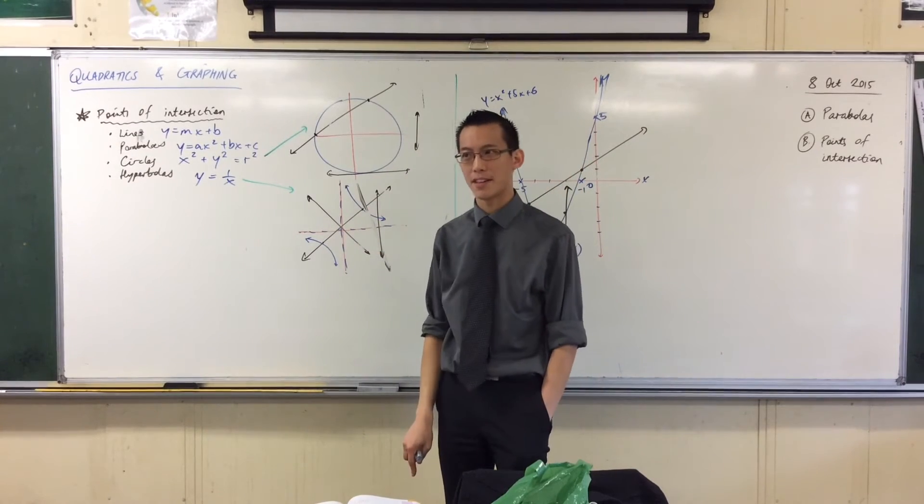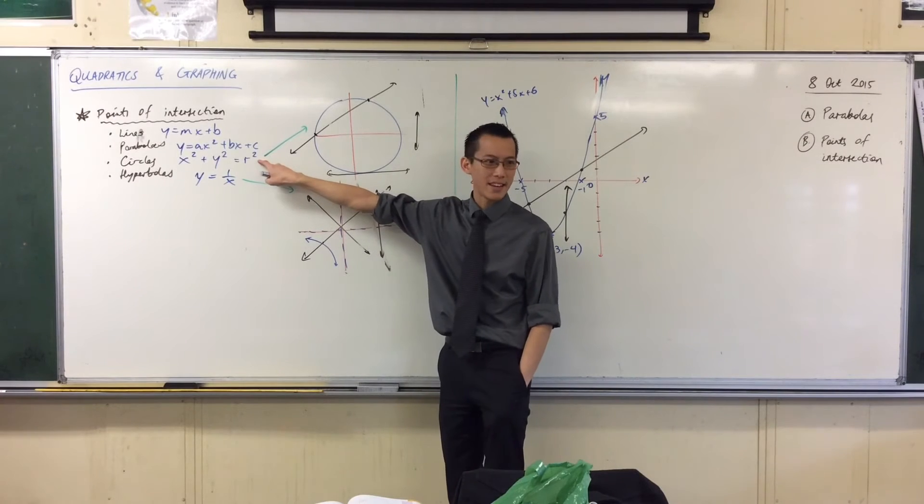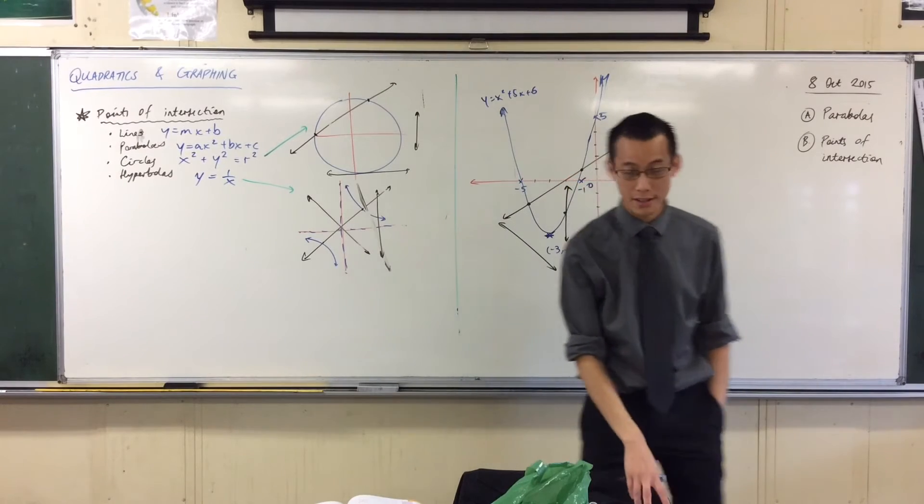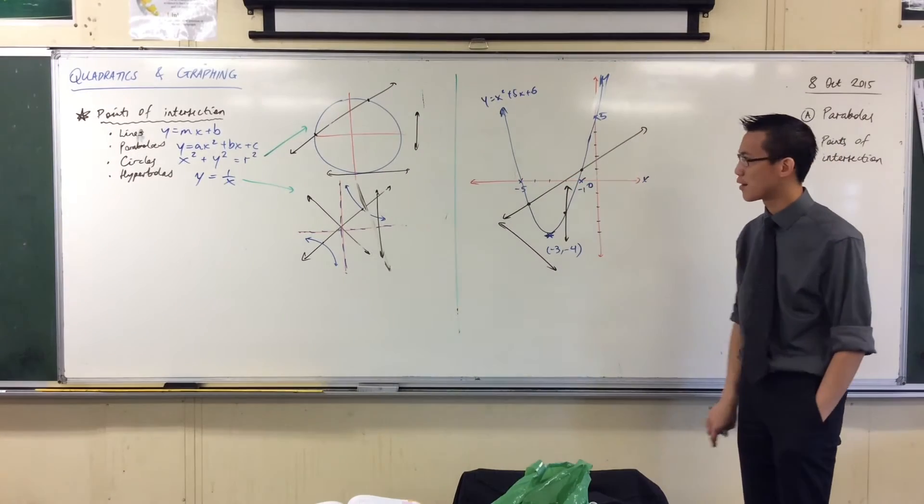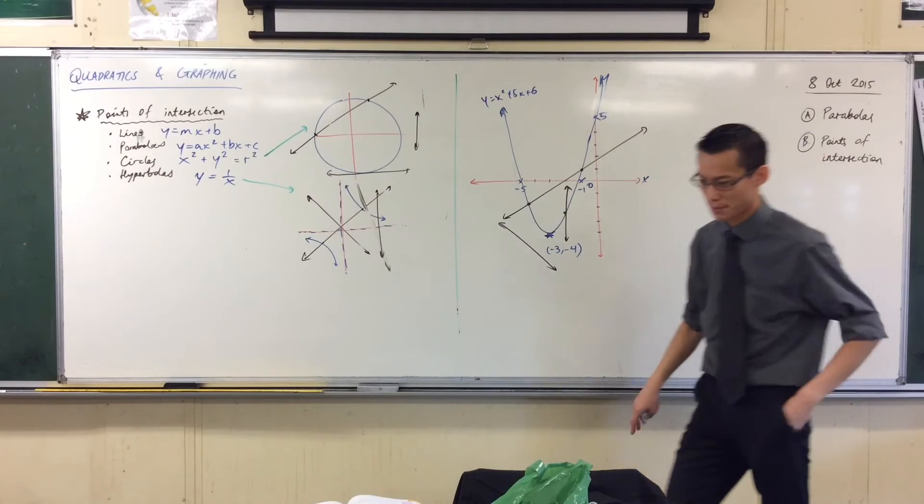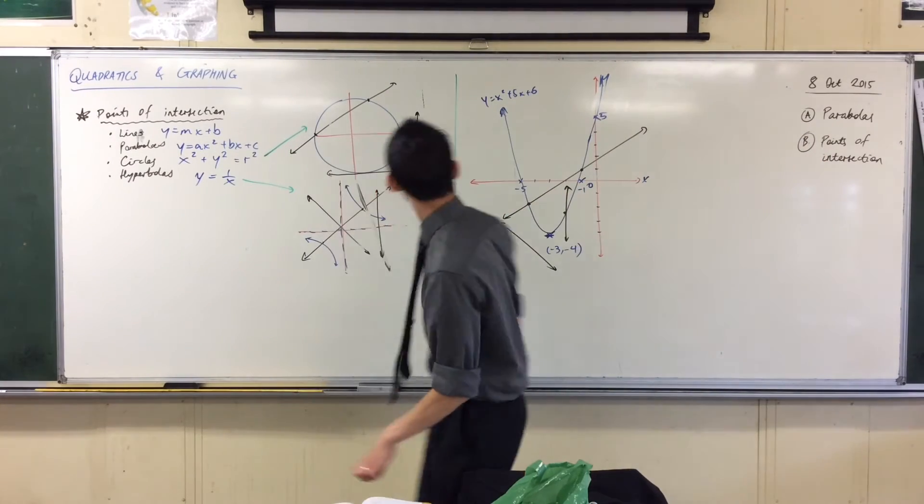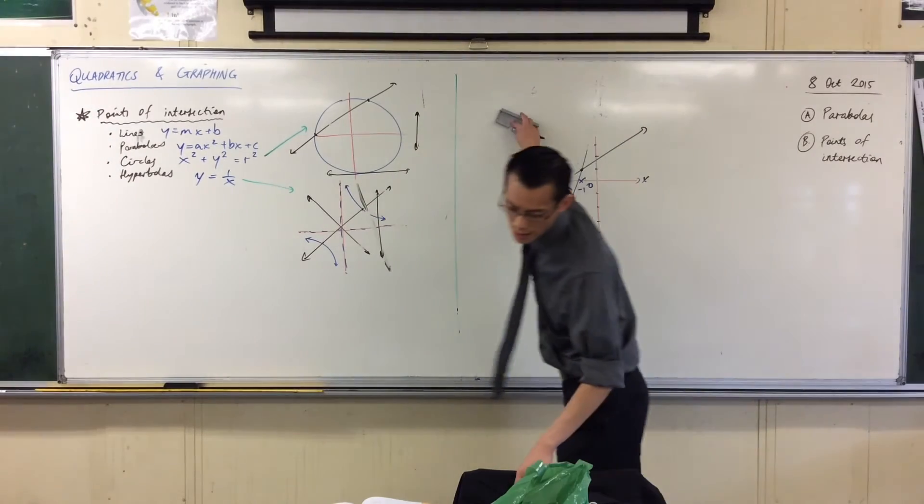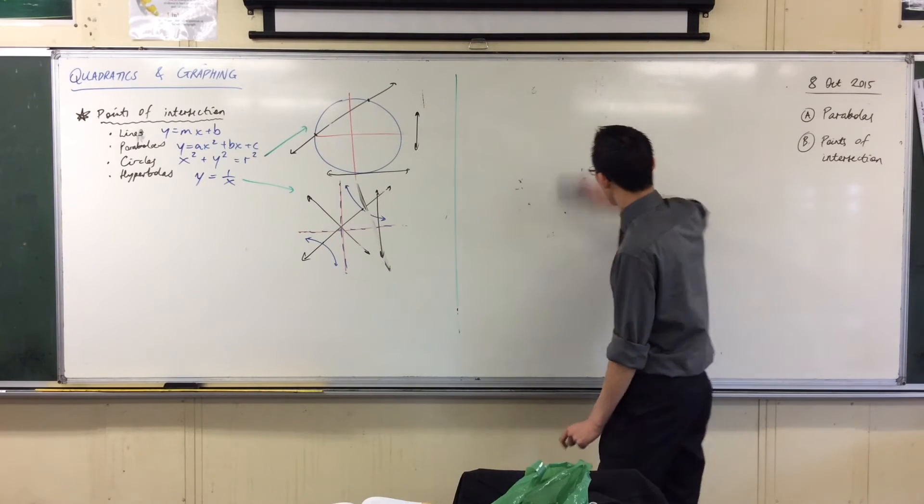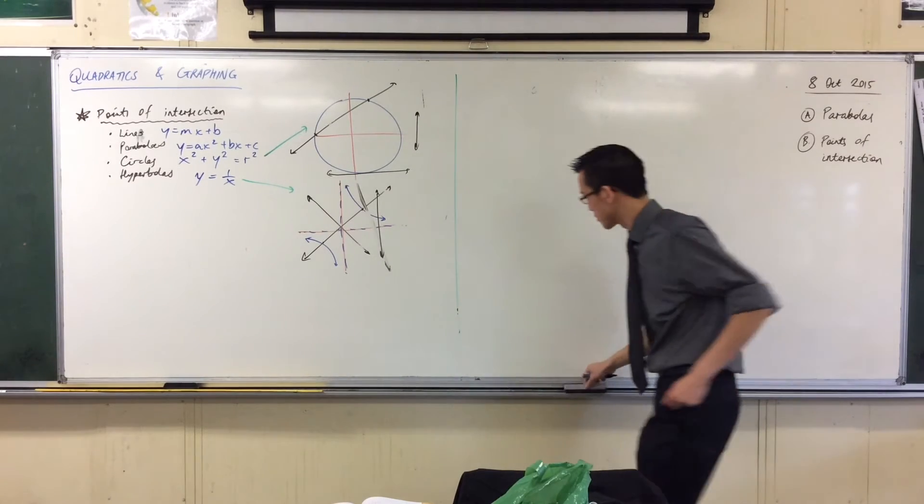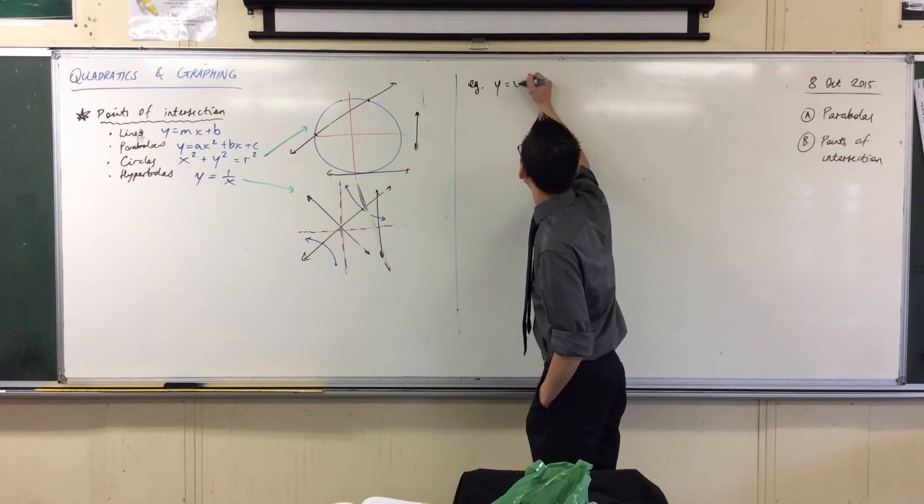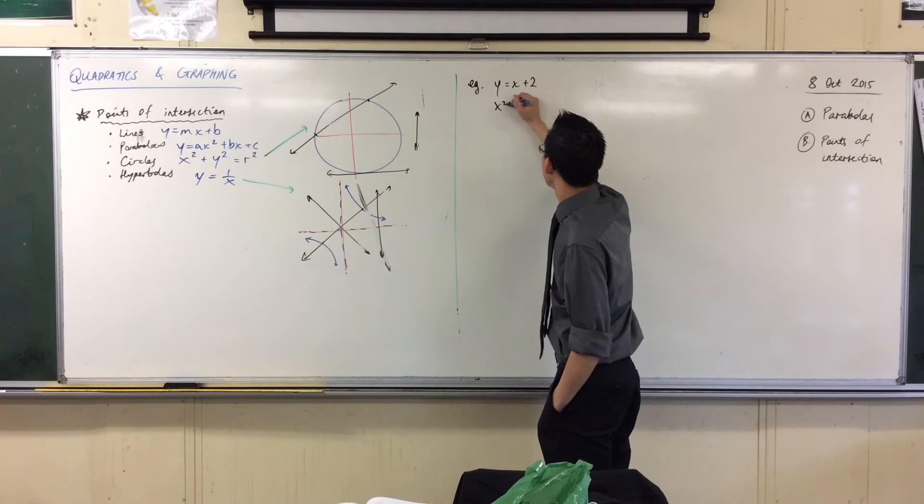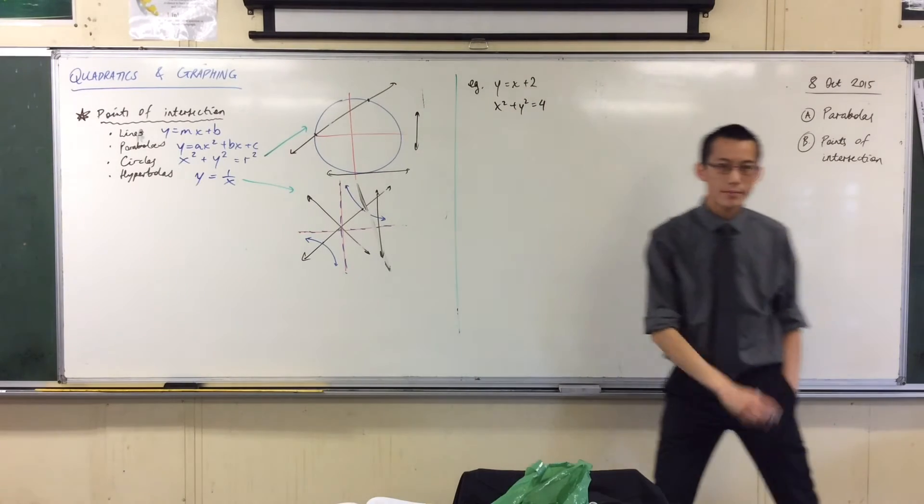Now that's a little more surprising, right? Because this is not a quadratic. And neither is this. But when I solve them, I will get a quadratic. So, we just have enough time for us to run through some really brief examples. Would you please write down this pair of equations? Y equals x plus 2. Y equals x plus 2. And x squared plus y squared equals 4.